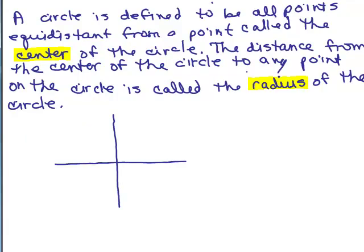Let's start off with the definition of a circle. A circle is defined to be all points equidistant from a point called the center of the circle. So the center of the circle is not part of the circle. The distance from the center of the circle to any point on the circle is called the radius of the circle.